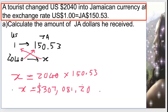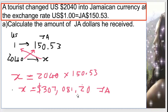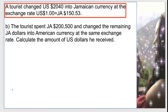And this is the Jamaican currency. So if one US gives us $150.53 and I have 2,040 US, we cross multiply: 1 times X gives me X, and 2,040 times $150.53. Multiplying it, we get the Jamaican currency of $307,081.20.